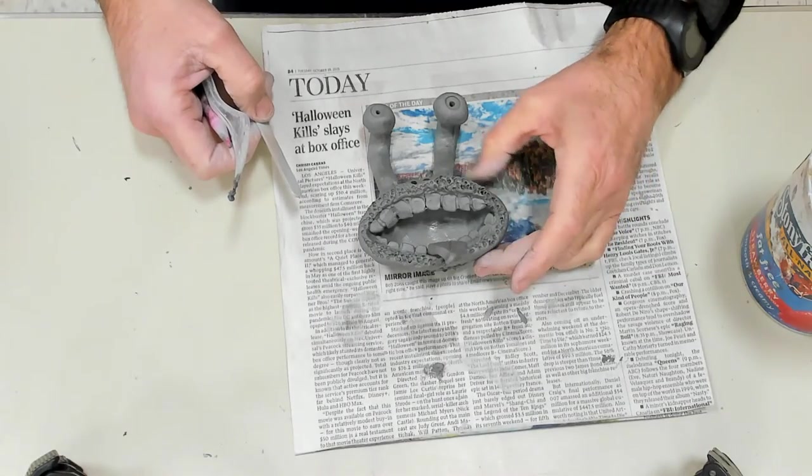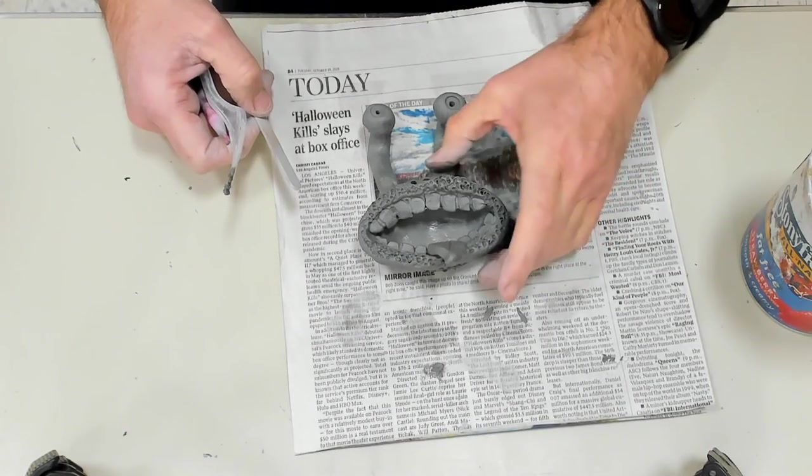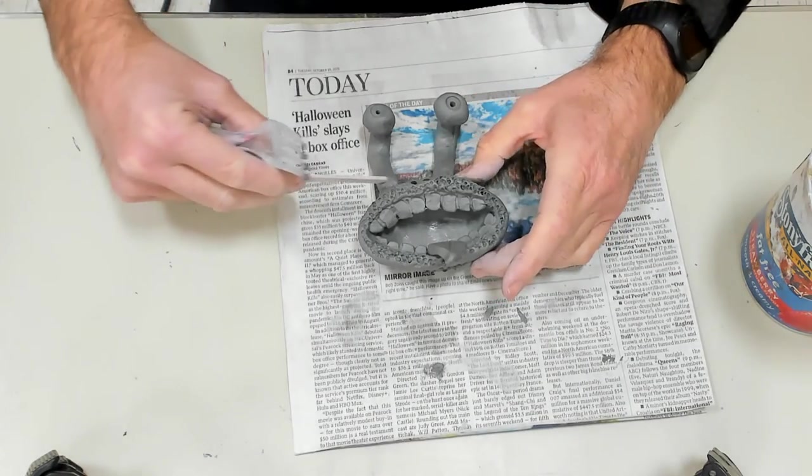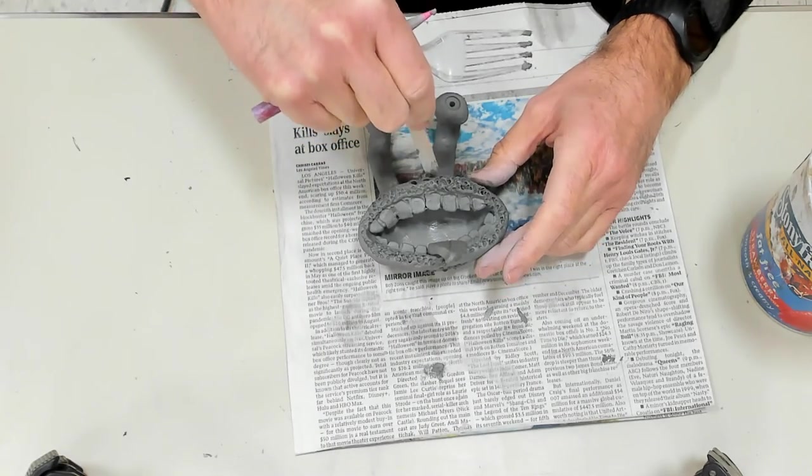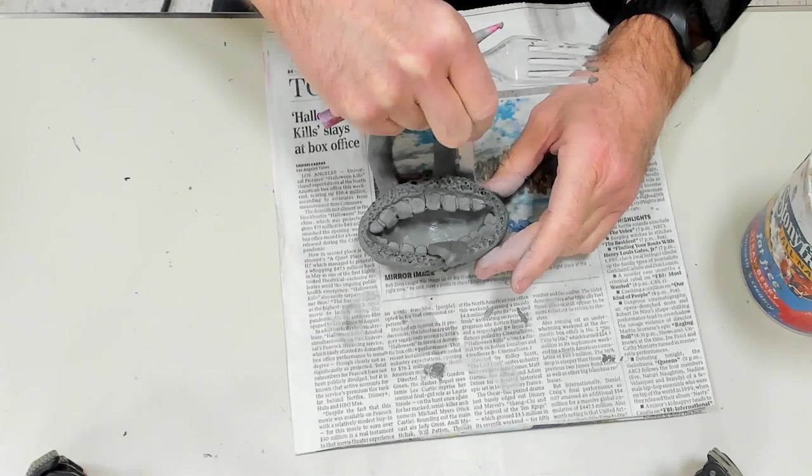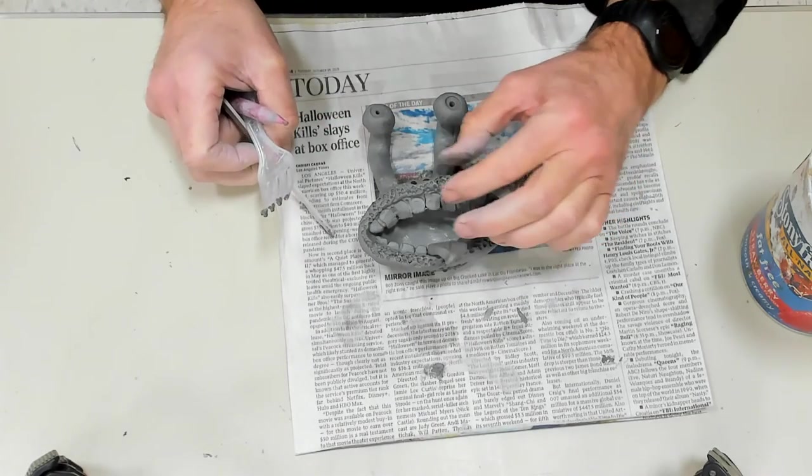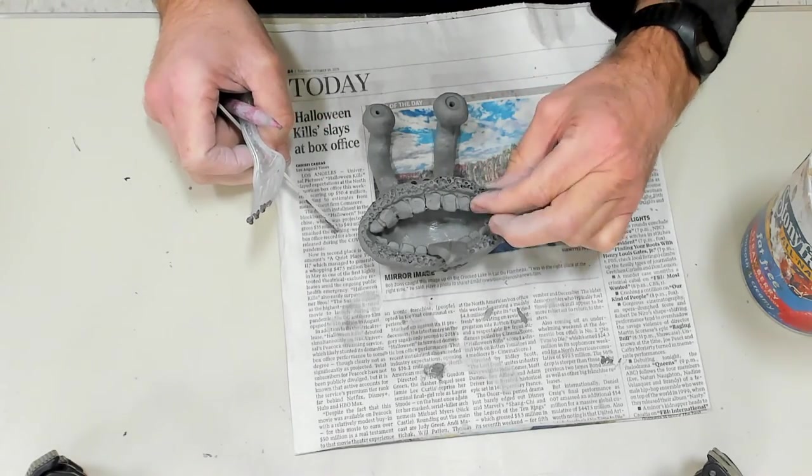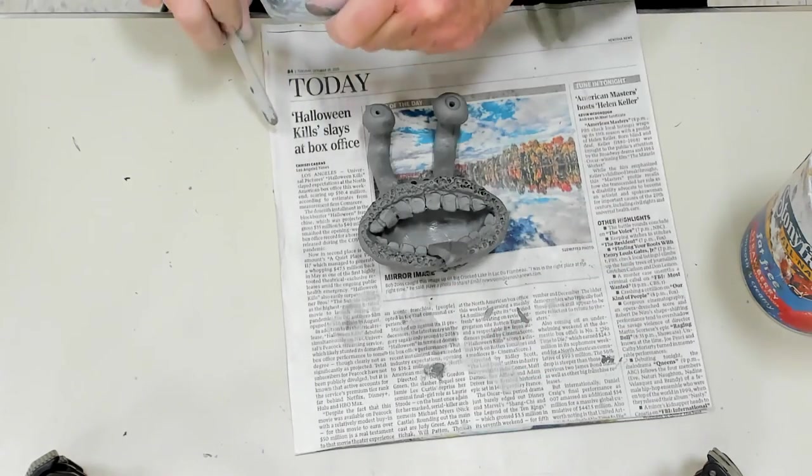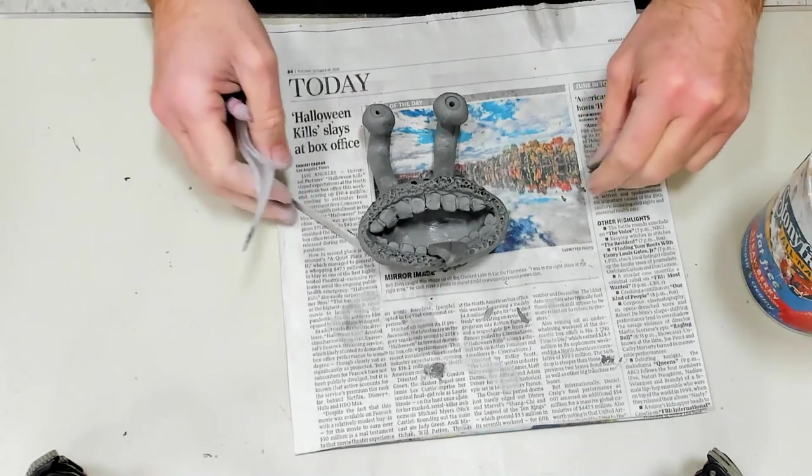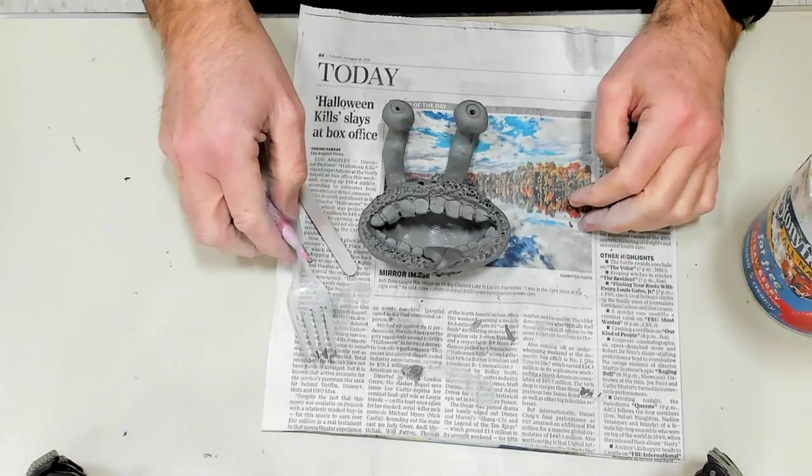Once these are fired, they'll be bisque fired, so they'll be white. Then we're going to use our watercolor paints to add more details and to paint them. Then we'll cover them with Mod Podge to seal the paint and to make them shiny, which will actually brighten the colors. I hope you enjoy making monster pots today.